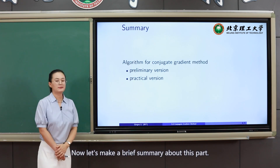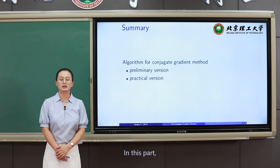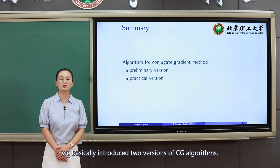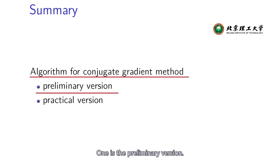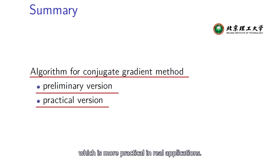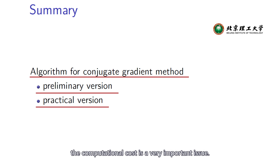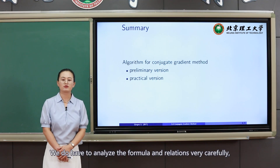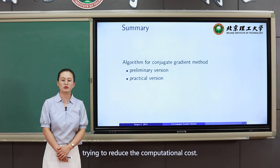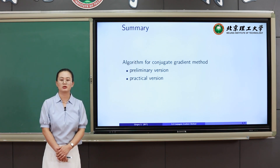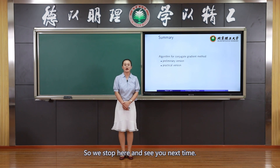Let's make a brief summary. In this part, we introduced two versions of the CG algorithm: the preliminary version and the refined practical version used in real applications. When designing an algorithm, computational cost is a very important issue — we must analyze the formulas and relations carefully to reduce computational cost. We stop here and see you next time.